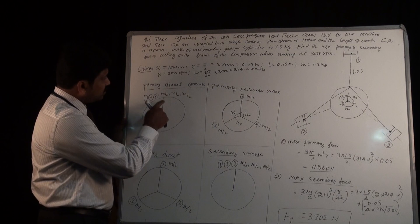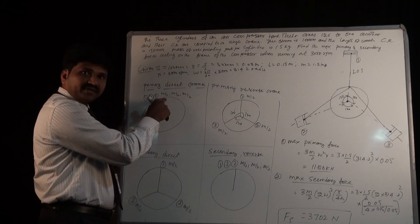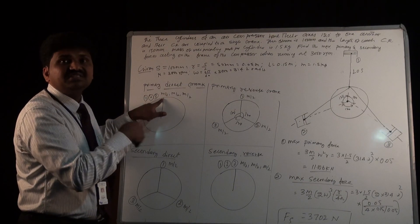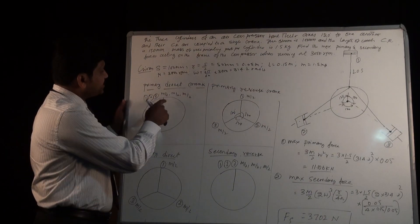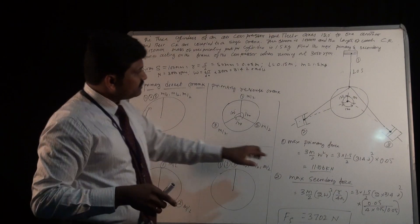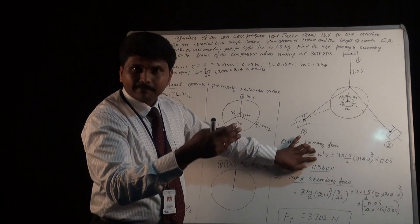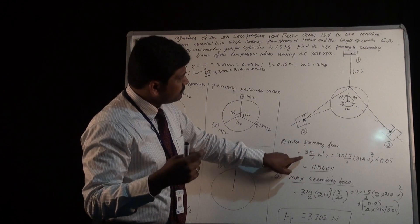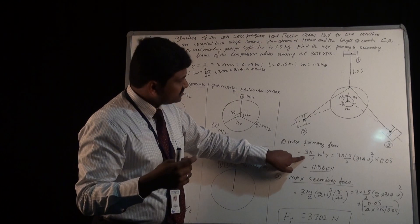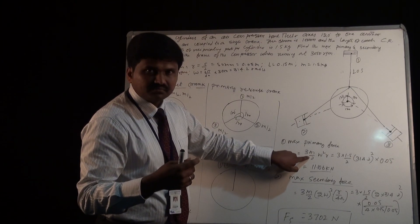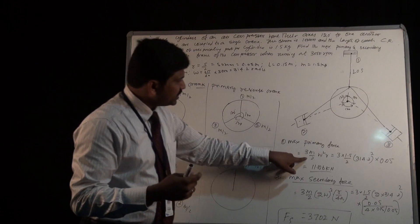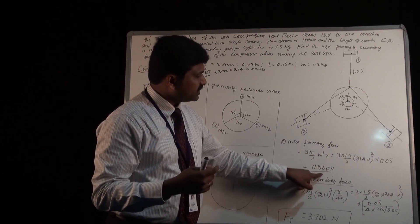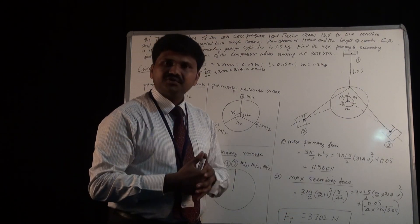However, all three masses are placed at the same direct crank point, so they are not uniformly distributed — they will produce an unbalanced force. The magnitude of the unbalanced force equals m·ω²·r, accounting for all three cylinders. Upon substituting all values, you will get the value 11,106 Newtons, or 11.106 kilonewtons.